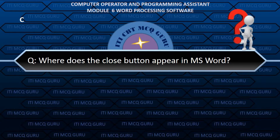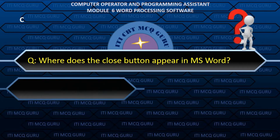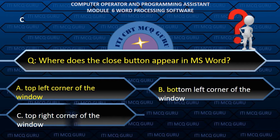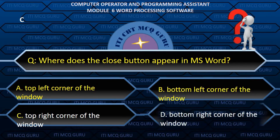Where does the close button appear in MS Word? C. Top right corner of the window.